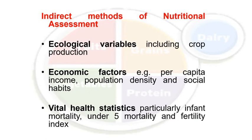The second is indirect method. We do not directly assess the nutritional status, but we can assume with these variables that the nutritional status of that community and population would be normal or not. It uses community health indicators that reflect nutritional influences. Examples are ecological variables such as crop production, soil fertility, food import and export and staples production. Then economic factors — per capita income, population density and social habits. We will also discuss vital health statistics, particularly infant mortality, under-5 mortality and fertility index, including neonatal mortality and maternal mortality.